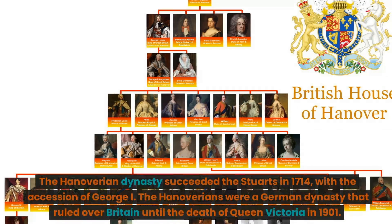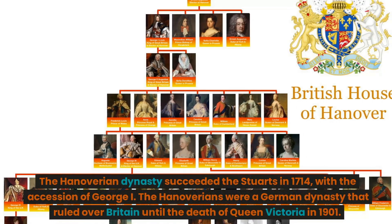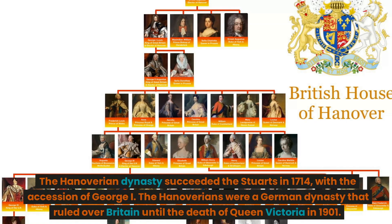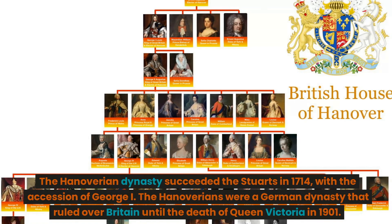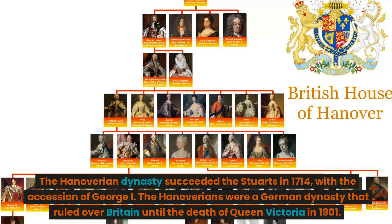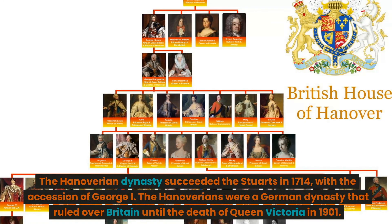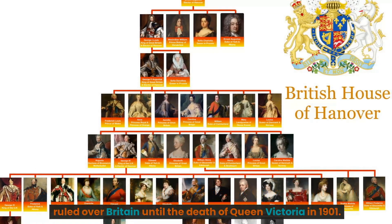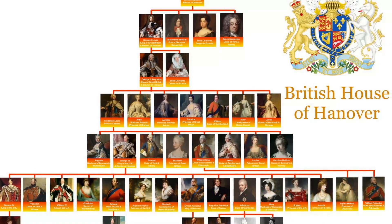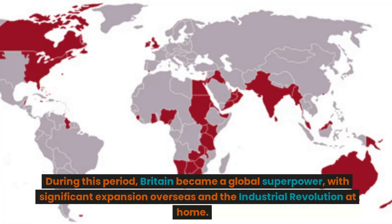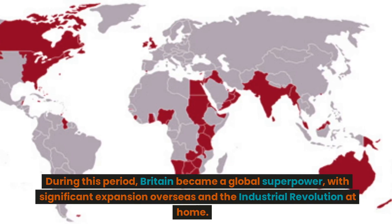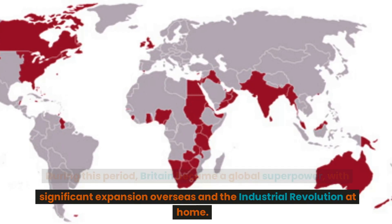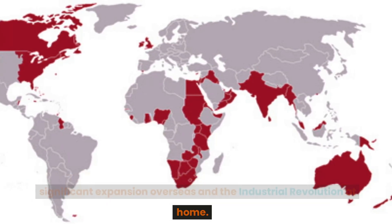The Hanoverian dynasty succeeded the Stuarts in 1714 with the accession of George I. The Hanoverians were a German dynasty that ruled over Britain until the death of Queen Victoria in 1901. During this period, Britain became a global superpower with significant expansion overseas and the Industrial Revolution at home.